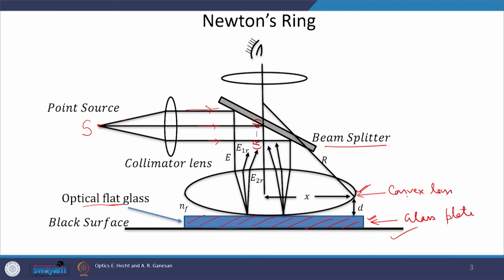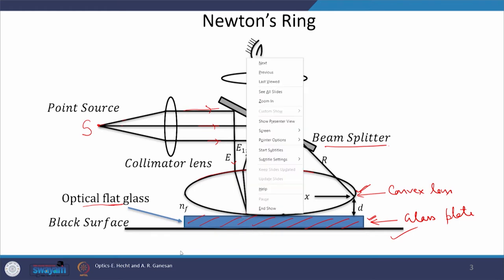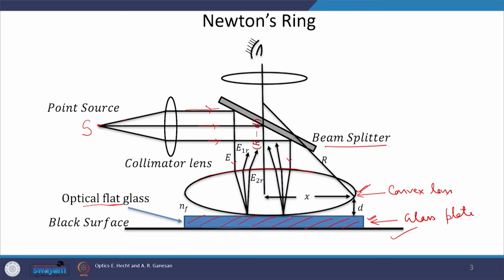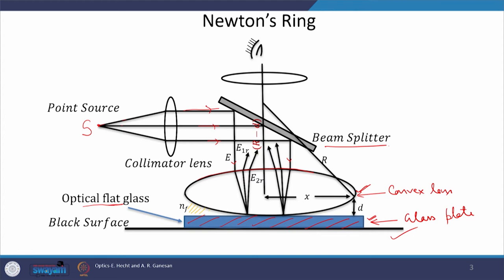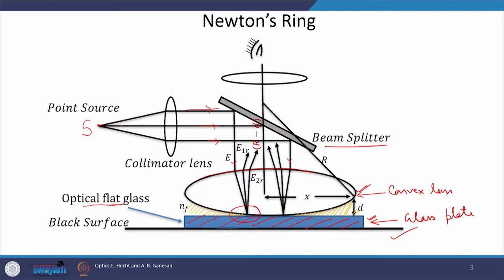When the beam falls normally on this system, then from the first surface of the lens, the beam refracts and then goes to the second interface. Between the lower interface of the lens and the top interface of the glass plate, there is an air film here. This is the air film which is between the lens and the flat glass plate. If you zoom in this area, this is what you will see — this is the lens and this is the top interface of the flat glass.